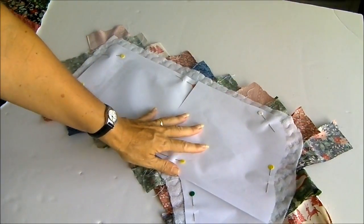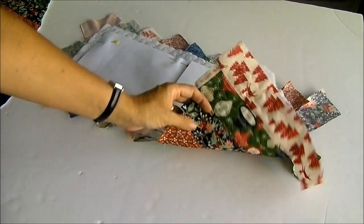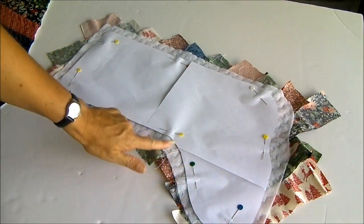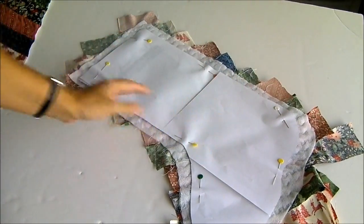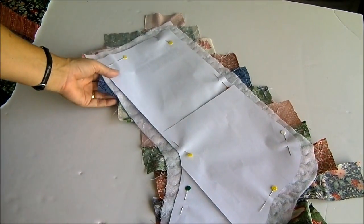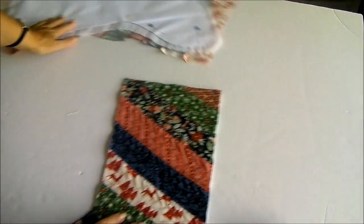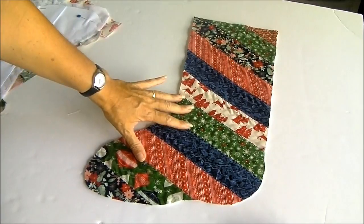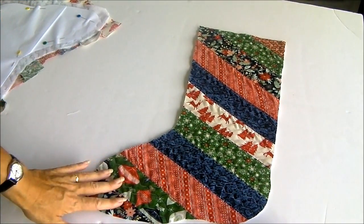Once your piece is fully quilted you're going to take your pattern and pin it to the back. You'll probably find it easier to pin to the back than to the front because you can then see exactly where your stitches and your fleece is and cut out two pieces of course, one facing one way one the other. Then your piece once cut out will look like this and you're now ready to start sewing the stocking together.